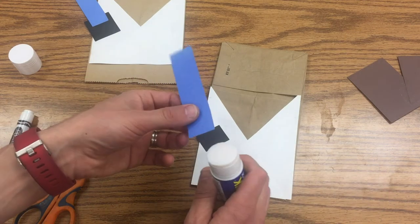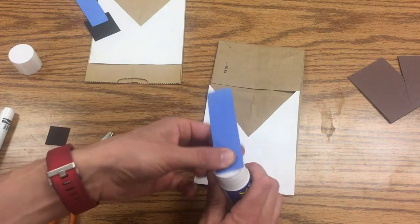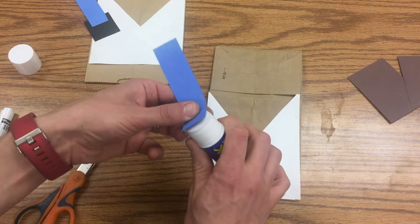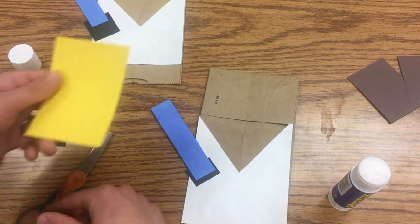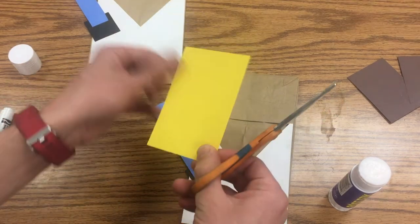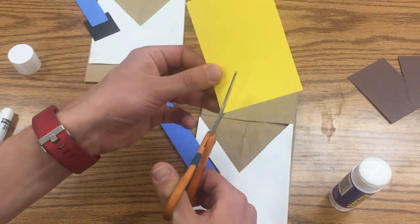I'm going to take a blue strip of paper for the lightsaber, then I'm going to take a yellow rectangle and cut it diagonally.